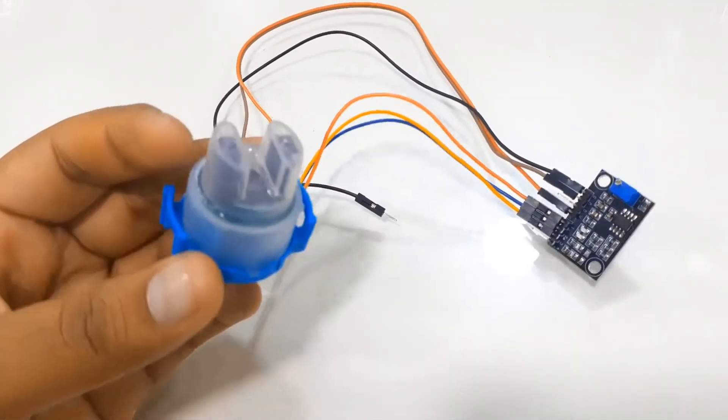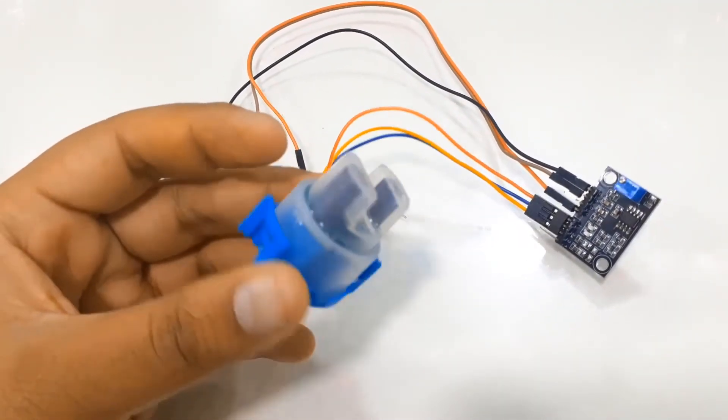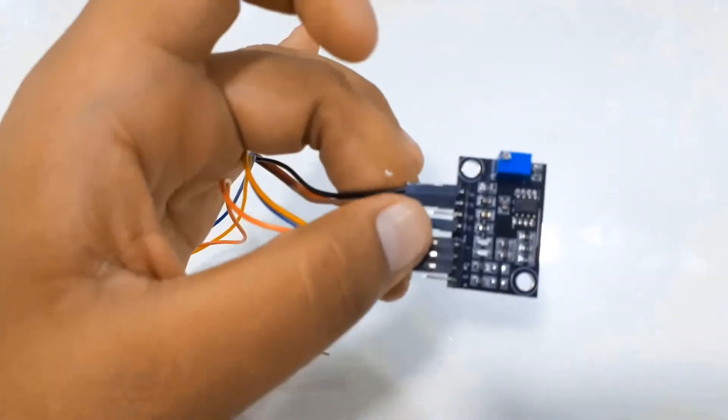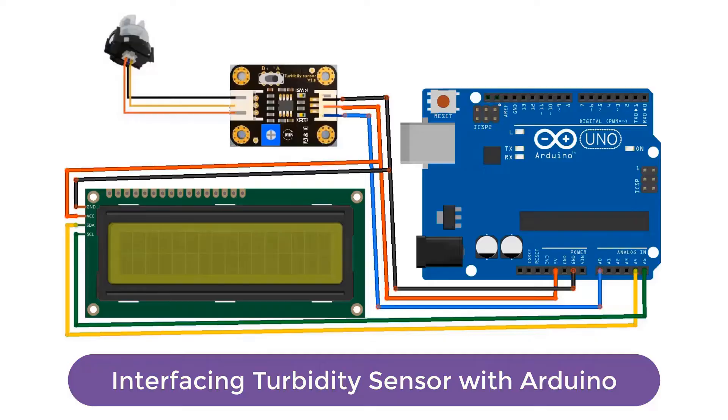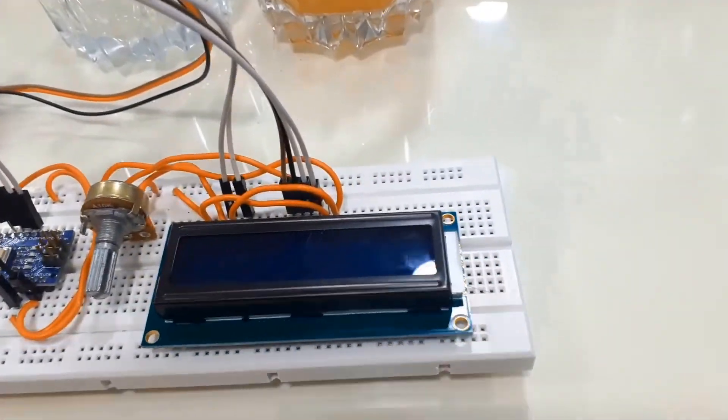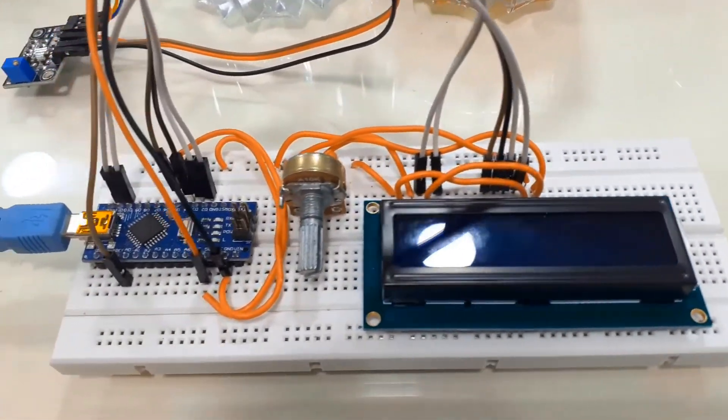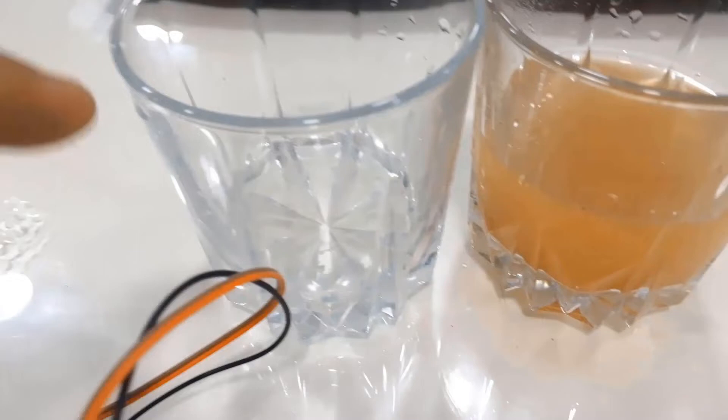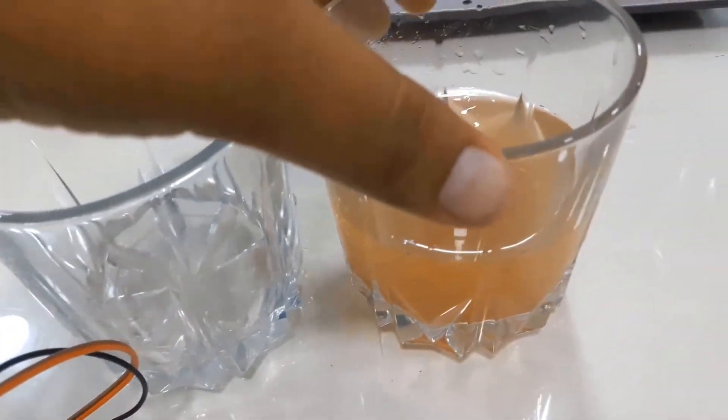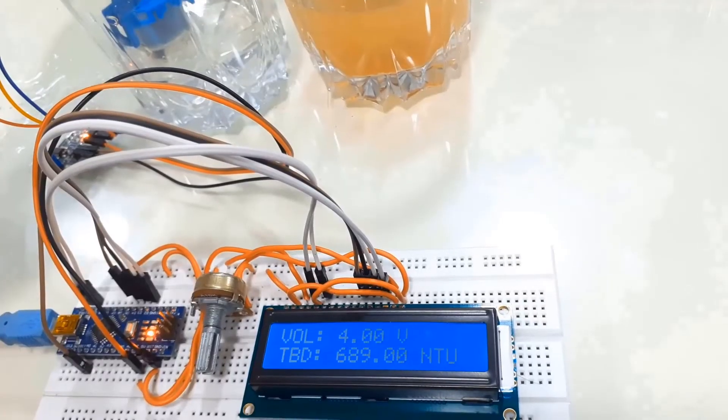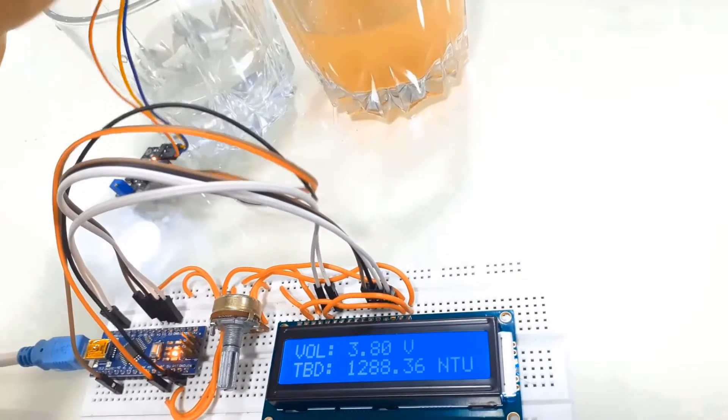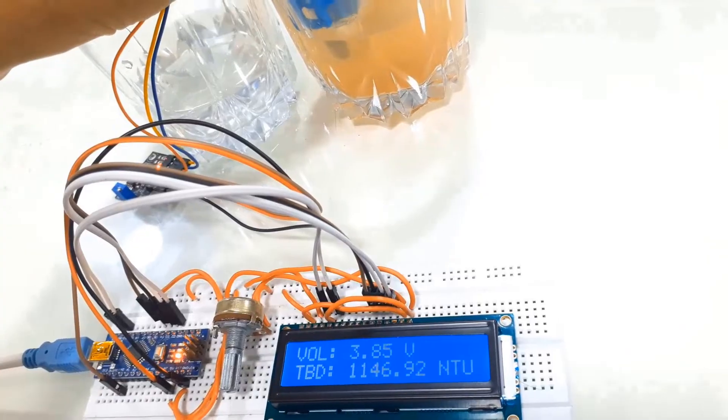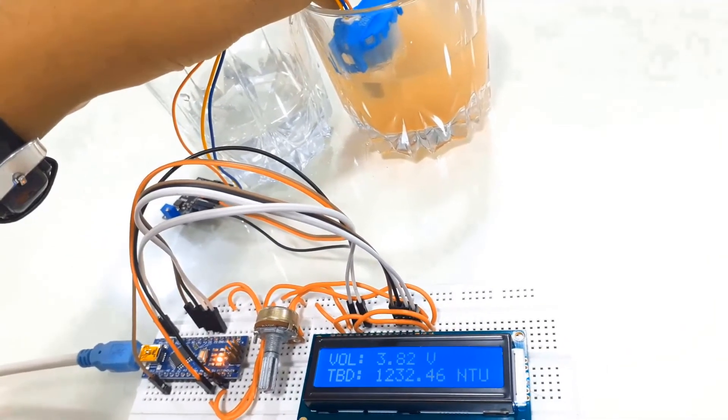So in this video, we will learn about the principle behind water turbidity measurement. We will use the turbidity sensor from DF Robot and interface it with the Arduino board. Using some mathematical calculations and Arduino code, we will calculate the turbidity of different samples of water. Then, we will measure the turbidity and display it on 16x2 LCD display. Thus, we can determine the turbidity of water using the turbidity sensor. So, without getting any delay, let's get started.